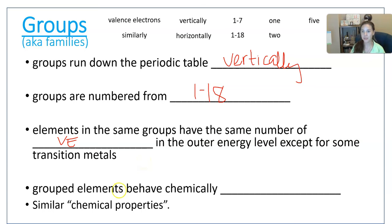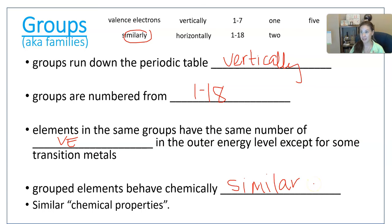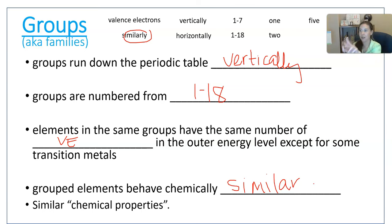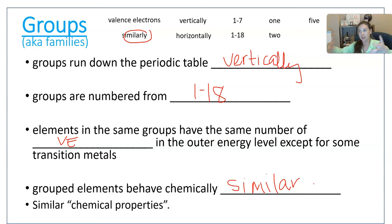Grouped elements behave chemically similarly — that's because if they have the same number of valence electrons, they all behave the same way. Everyone in the first column is very reactive, trying to velcro themselves to another atom, whereas everyone in column 18 with eight valence electrons is steady and happy — they don't need to react as much. They have similar chemical properties.